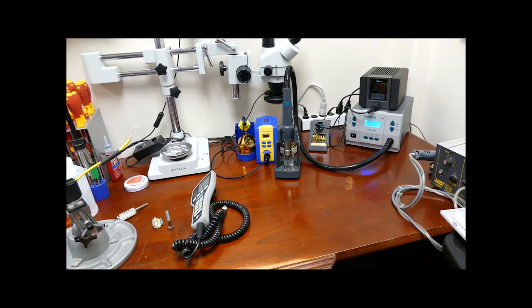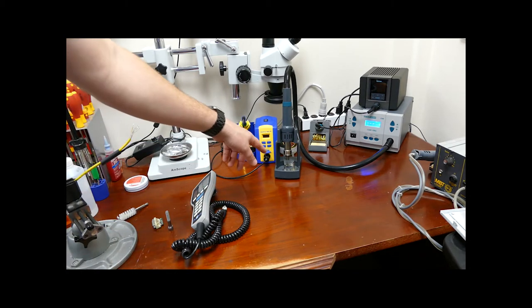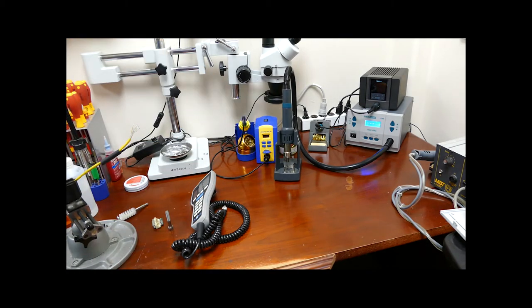The QUICK 861DW is an excellent little hot air station. It's only about $300 and it comes with a couple extra tips, a weighted base, and the main unit itself. It does have ESD protection, so I can clip it to a mat, but as you see I don't usually use a mat.